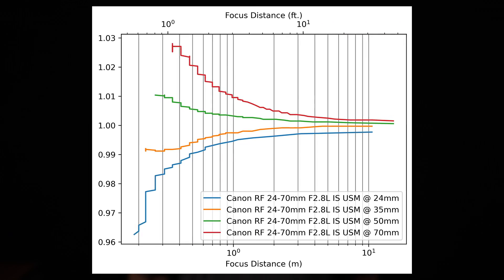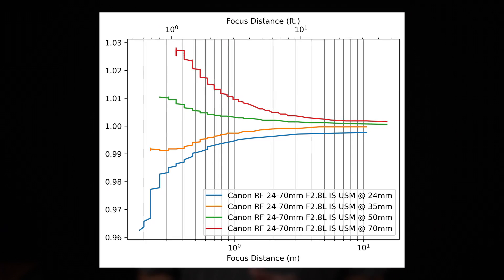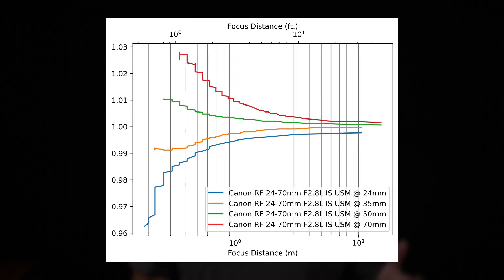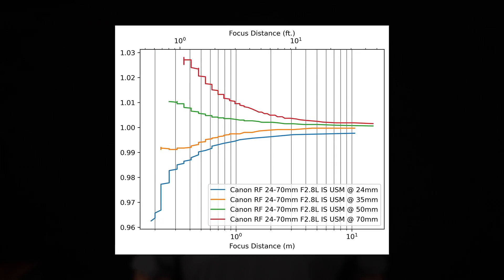Now, overall, breathing on this lens is very well corrected, with the worst case actually being a total shift of just under 4% at 24 millimeters.